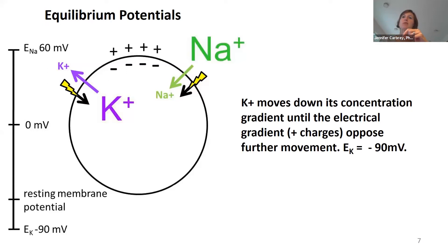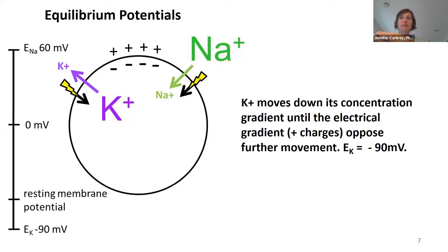I encourage you to take time with a piece of paper and pencil — draw a circle for a cell, draw some little ions, open up the channel, and say: they're going to move in this direction because of the chemical gradient. They're going to keep doing that until it's so negative or positive inside the cell that the net flow eventually stops. And whatever the membrane potential is at that point is the equilibrium potential. When you're talking about the equilibrium potential, you're talking about only one type of ion channel being open.